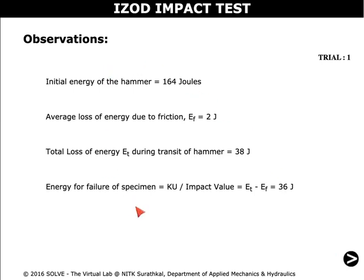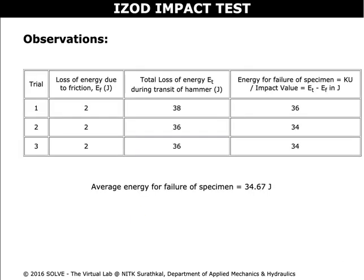Similarly we follow the same procedure for the next two trials. Variation in the different values for different trials is noted and the average energy for failure of specimen can be found.